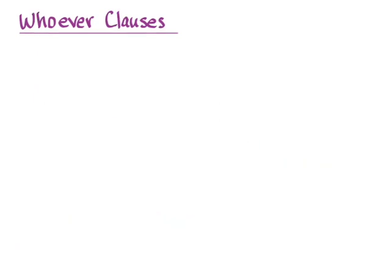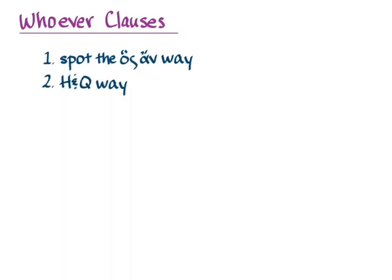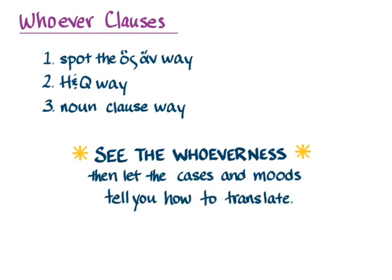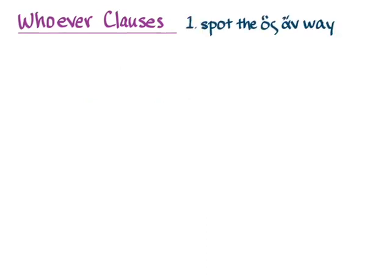I'm going to go through three different ways for understanding, identifying, and getting to a translation of these clauses. The first I'll call the 'Spot the Hoss-an' way, which is how I deal with whoever clauses in real Greek. The second is the Hanson and Quinn way to explain them. And the third involves thinking about them again as noun clauses. The key to all of these is to see and recognize the 'whoever-ness' — the fact that you're looking at one of these indefinite clauses. And once you do, it's pretty natural to let the cases and moods tell you how to translate.